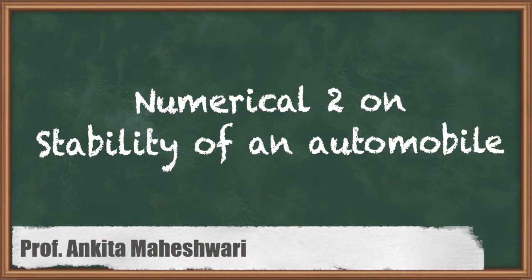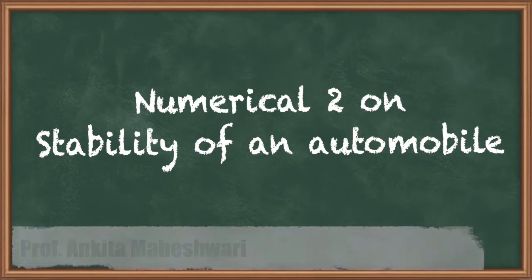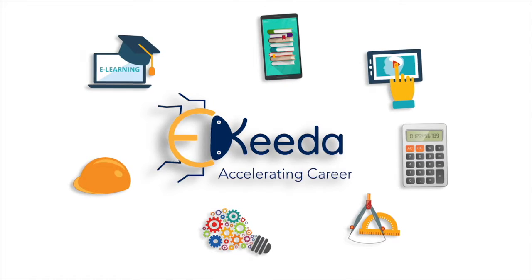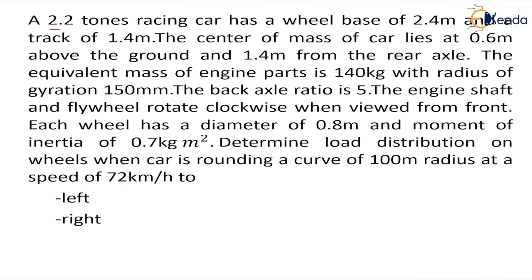Hello everyone. In this video we'll discuss a numerical on stability of an automobile. In this question we are given that the weight is 2.2 tons, the wheel base b is 2.4 meters, track width w is 1.4 meters, the center of mass of the car lies at 0.6 meters above the ground and 1.4 meters from the rear axle. The equivalent mass of engine parts is 140 kg, radius of gyration is 150 mm, and the back axle ratio is 5.